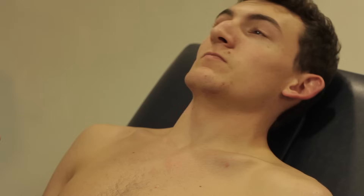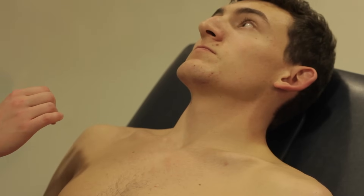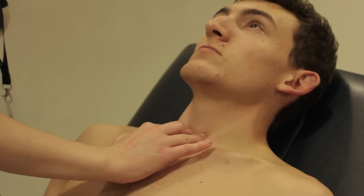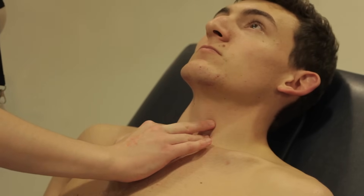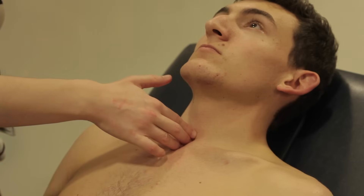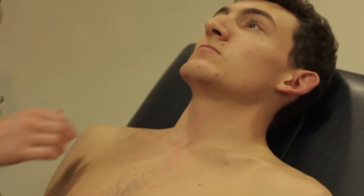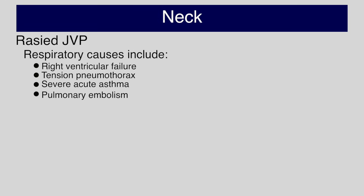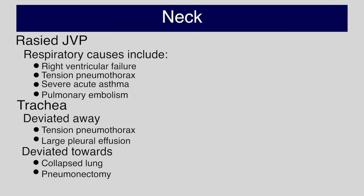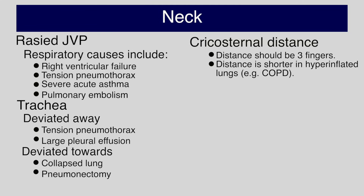The doctor is now feeling for any tracheal deviation, and then the cricosternal distance. The JVP is raised when it is more than 3 cm in vertical height above the sternal angle. The trachea may be deviated in the situations shown. The cricosternal distance is the distance between the suprasternal notch and the cricoid cartilage; this should be three fingers. If the chest is hyperexpanded, the distance is shorter.